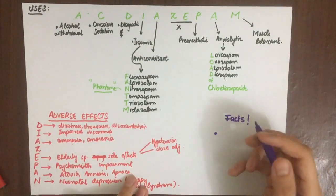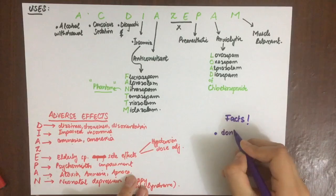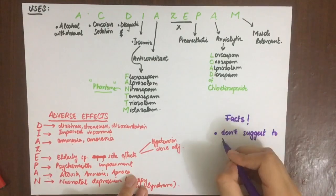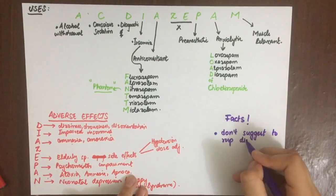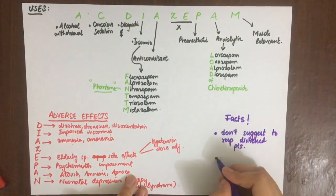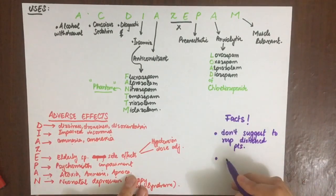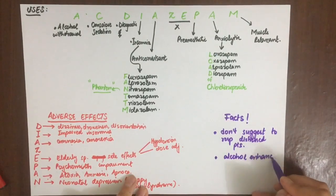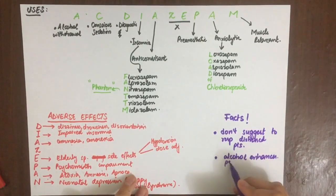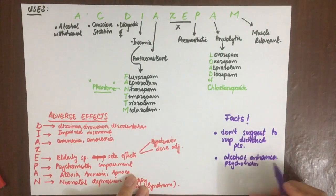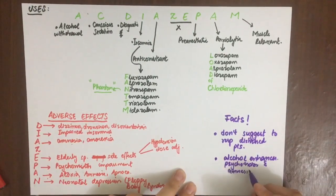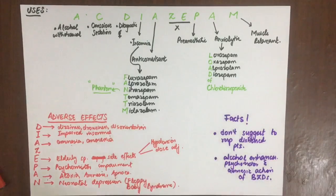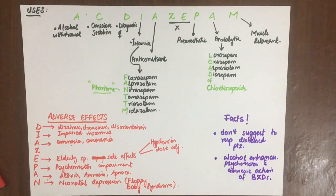Important facts: do not prescribe benzodiazepines to patients with respiratory depression, as it will further compromise ventilation. Alcohol, being a CNS depressant, enhances the psychomotor depression and amnesic action of benzodiazepines.